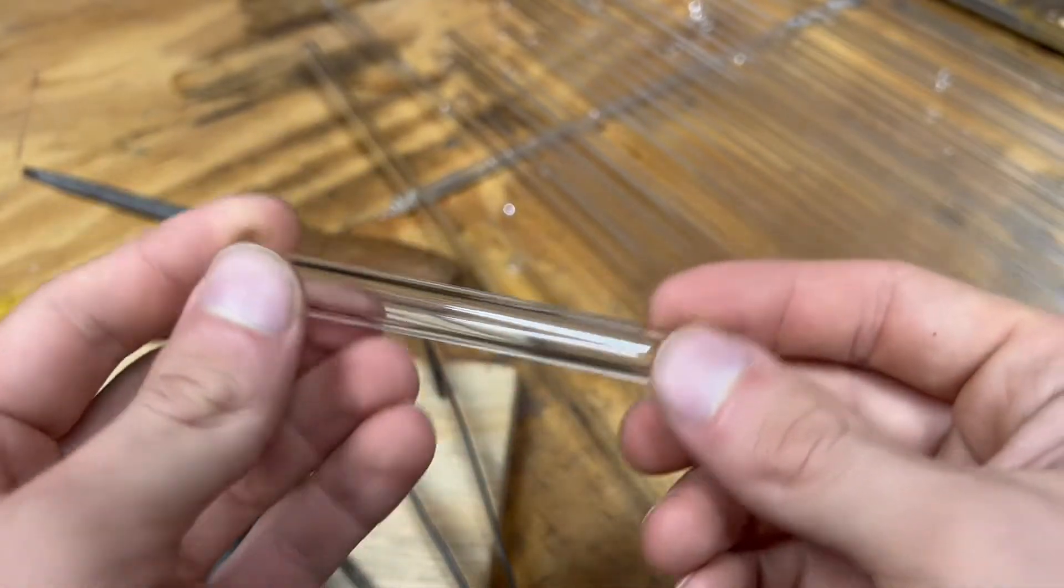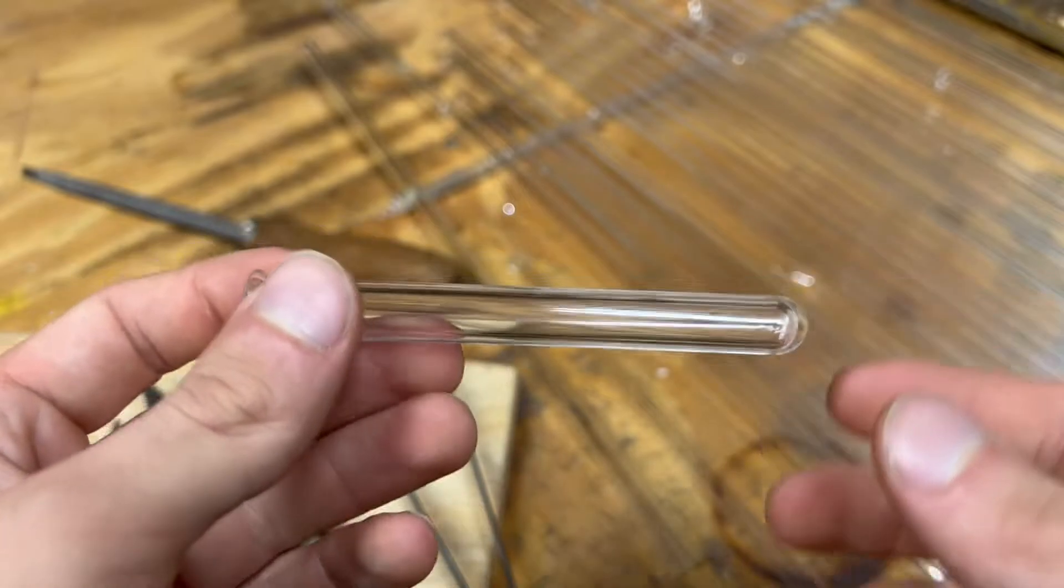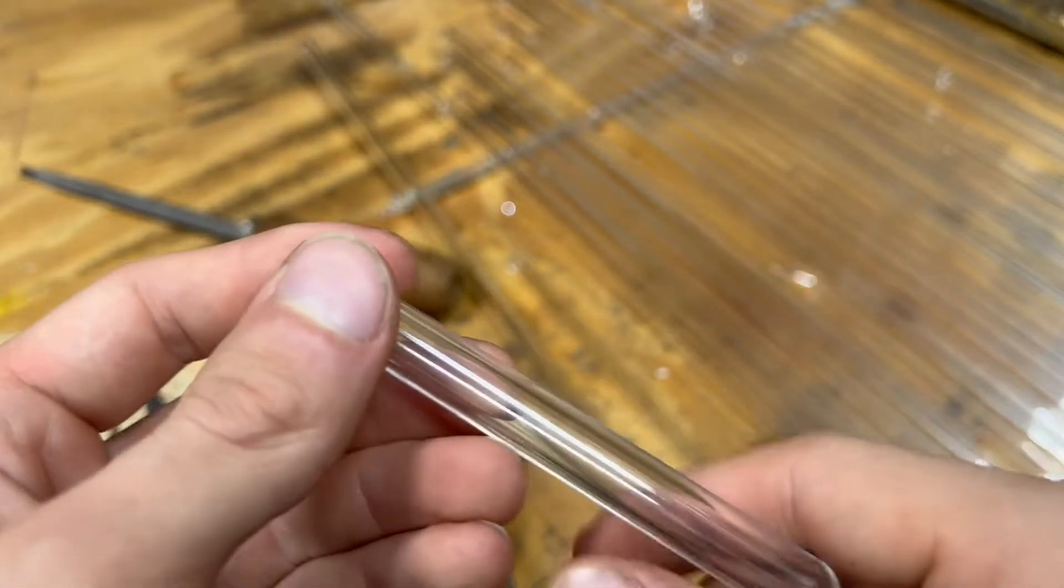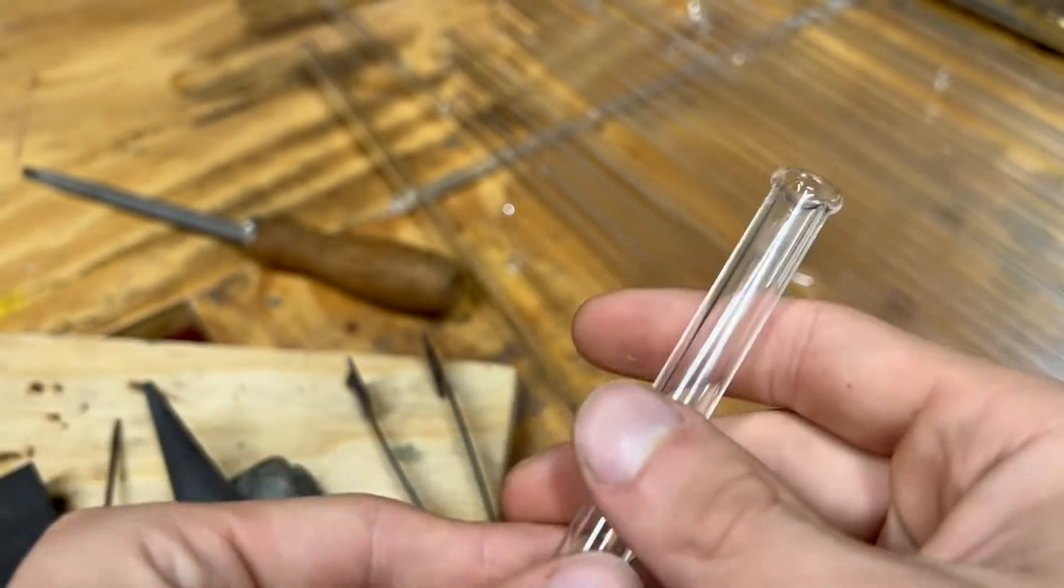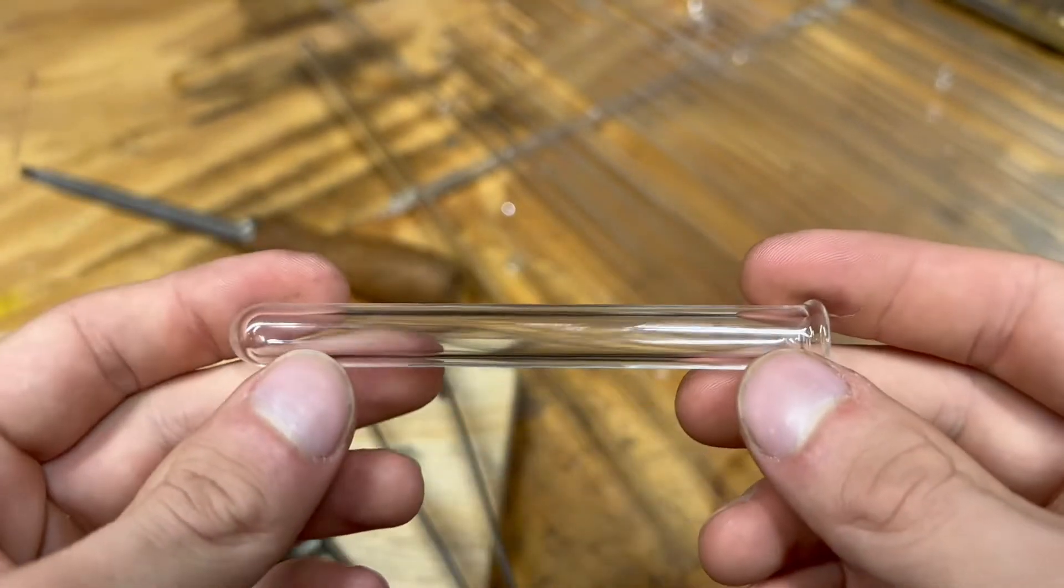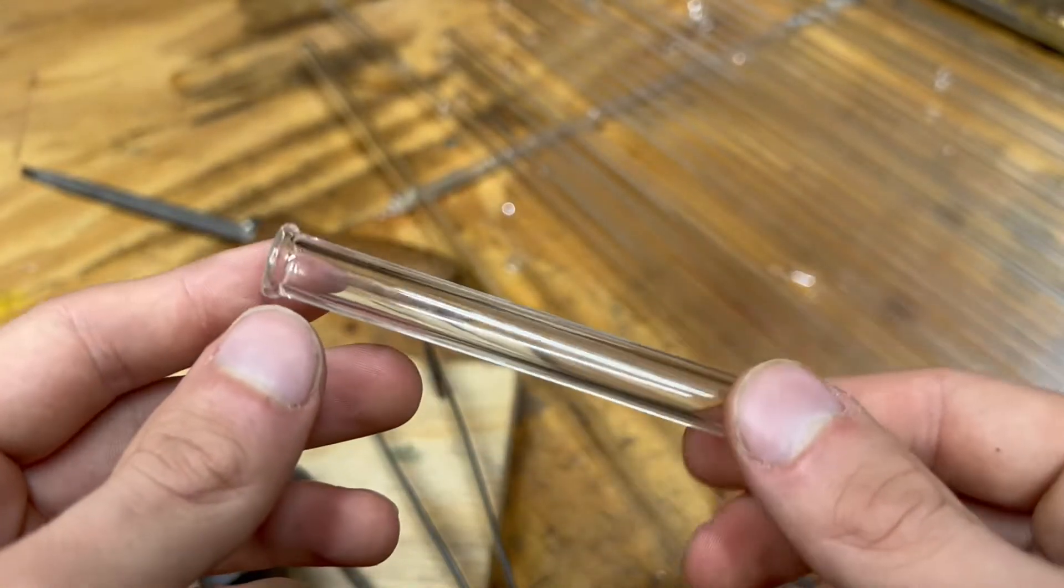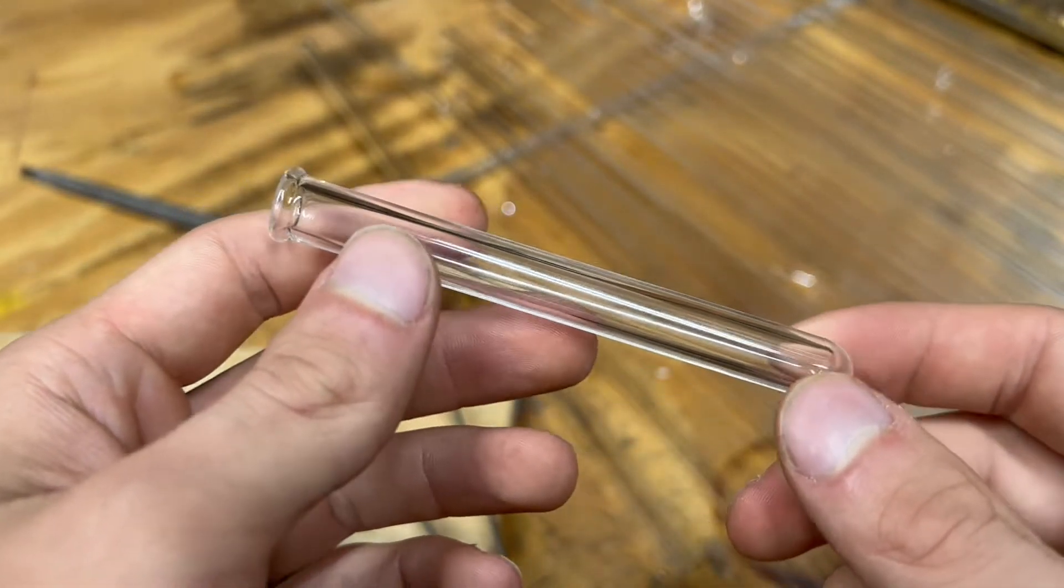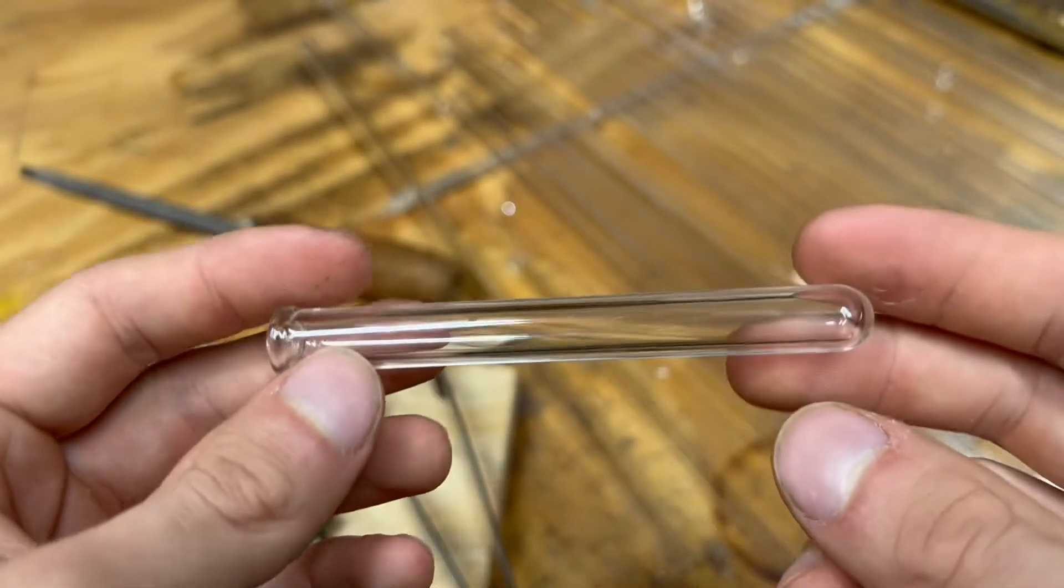The test tube is found in any place where science is conducted. It's synonymous with science itself. Any movie trying to depict science has test tubes somewhere in the video. It's a versatile piece of equipment that has many uses and without it, the field of science would not be what it is today.